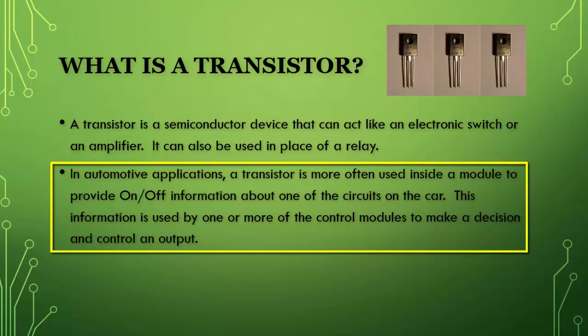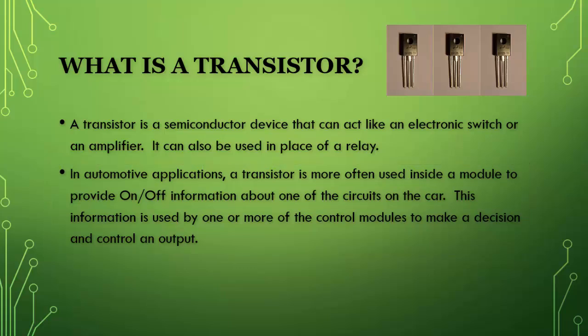For automotive applications, a transistor is more often used inside a module to provide on-off information about one of the circuits on the car. This information is used by one or more of the modules to make a decision and to control an output.